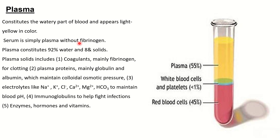Last time we talked about blood and defined it, noting that it has a liquid component. Today we're going to focus on that. So what is plasma? Plasma is the water part of blood and it appears light yellow in color. Whenever we have plasma without fibrinogen, it's called serum — it's no longer called plasma. We get serum whenever we coagulate the blood.